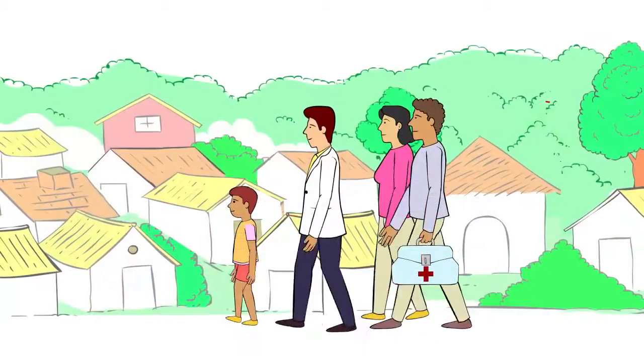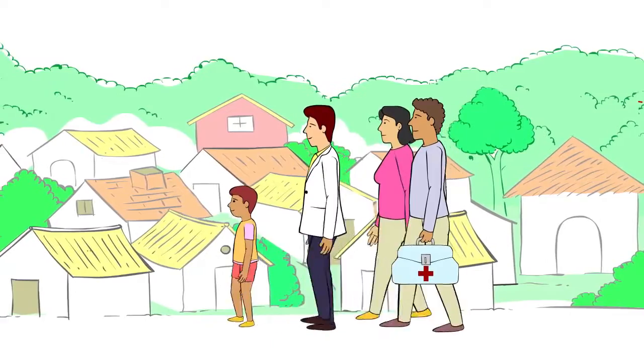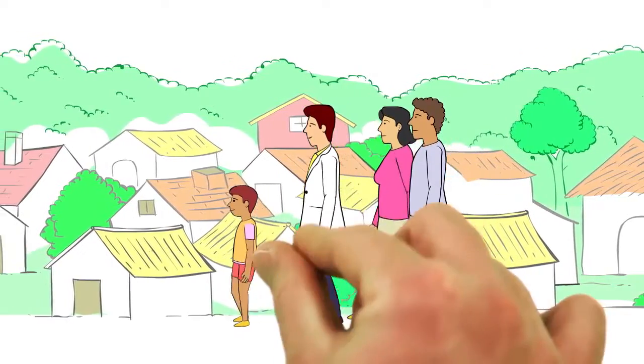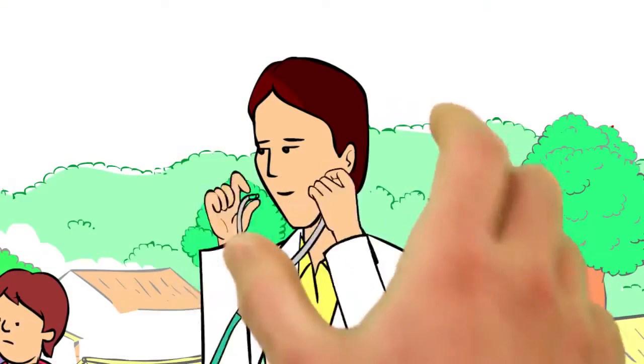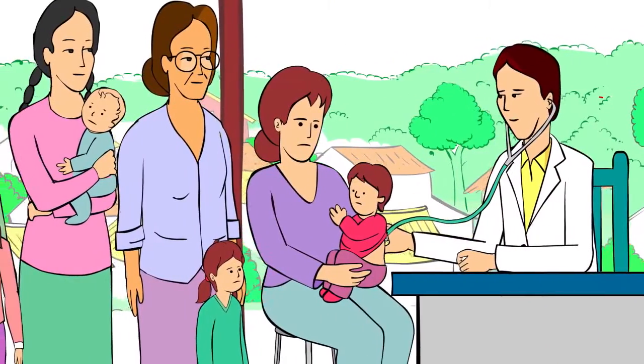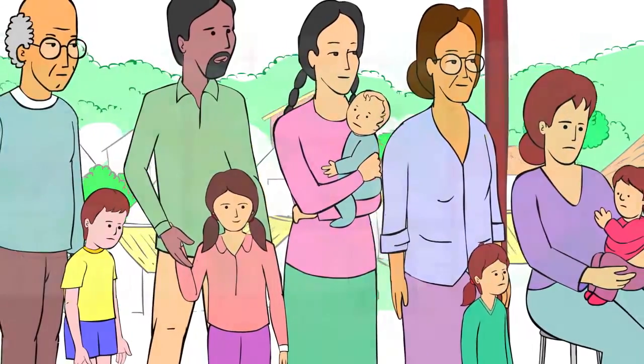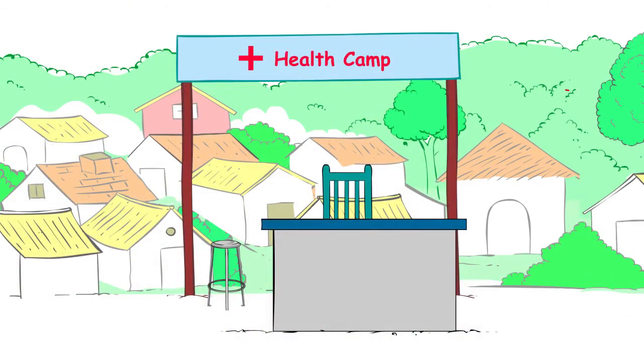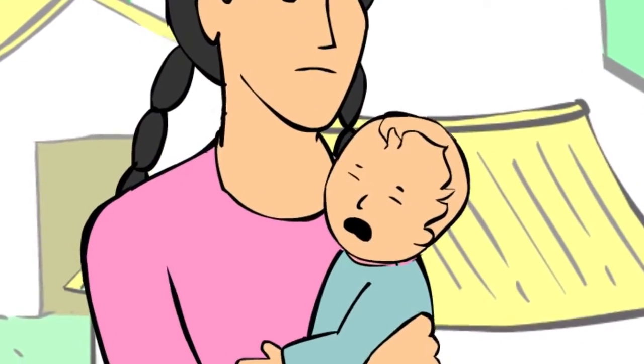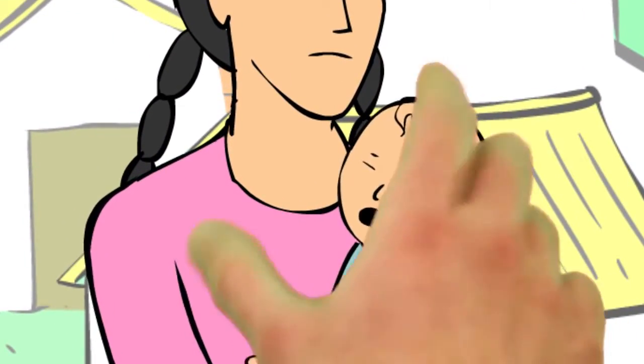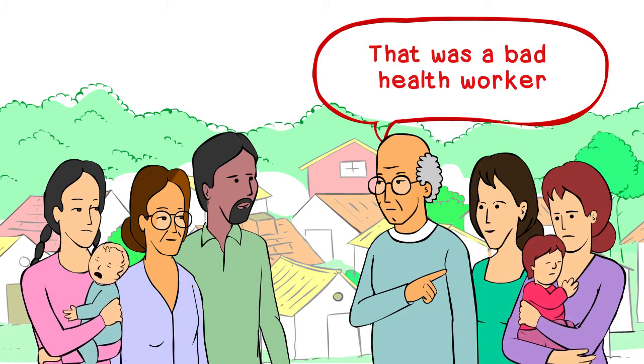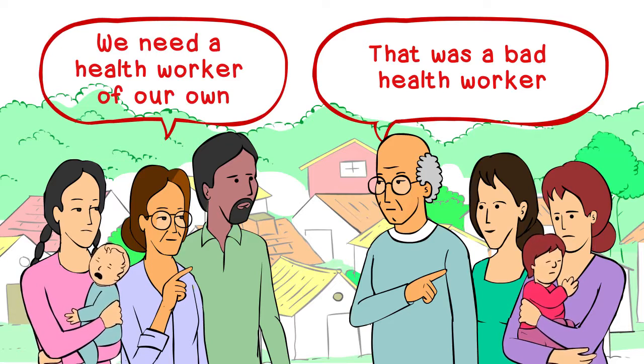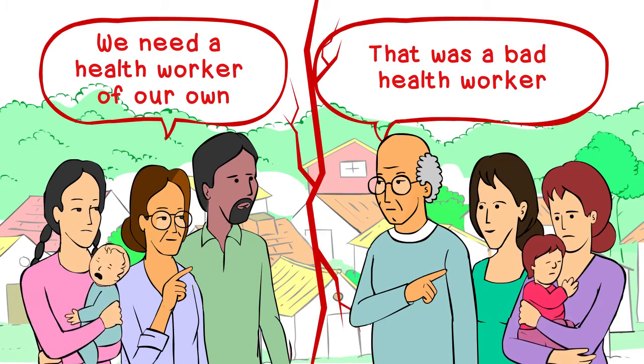The family that visited the third neighboring community also returns. They are accompanied by a health worker. The health worker provides short-term services to address the immediate concerns. The health worker leaves. After the health worker leaves, sicknesses return. Arguments begin. Some blame the health worker. Some argue that they need a health worker of their own. Division appears within the community.